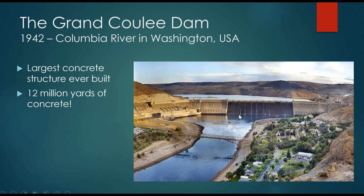In 1942, the Grand Coulee Dam was another major hydroelectric project that blocked off the Columbia River in Washington. At the time it was the largest concrete structure ever built, containing nearly 12 million cubic yards of concrete — a very, very big dam, all done out of concrete.